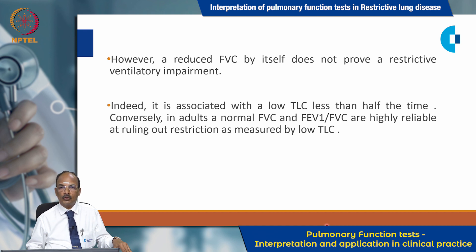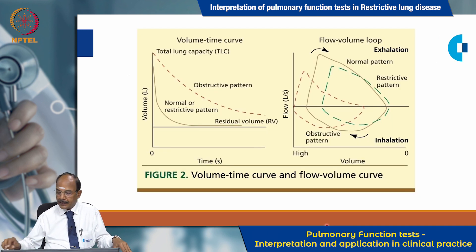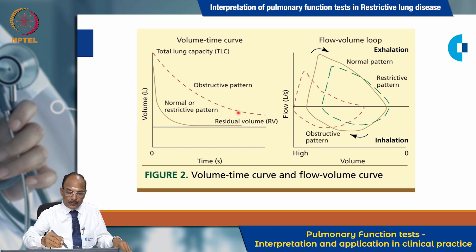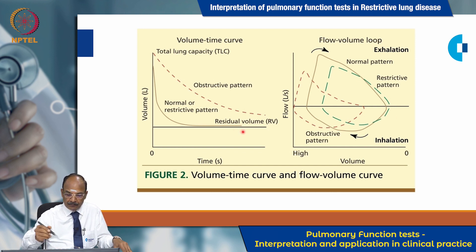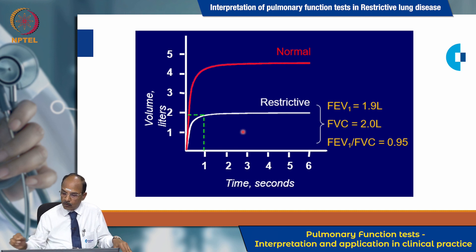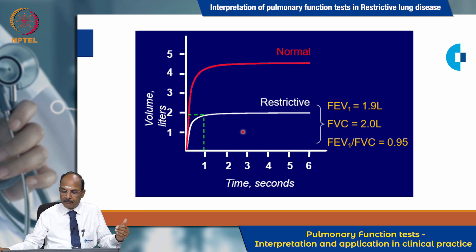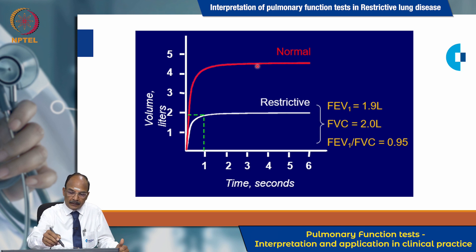Conversely, in adults, a normal forced vital capacity and FEV1/FVC ratio are highly reliable at ruling out restriction as measured by low total lung capacity. If you see the time-volume curve, the normal pattern shows a typical shape, but in the obstructive pattern you get a steep decline, and in the restrictive pattern you get a convexity instead of the usual concavity. In the restrictive time-volume curve, there is a symmetrical reduction in both FEV1 and FVC, so the ratio is preserved, but the curve is totally decreased in both height and time.